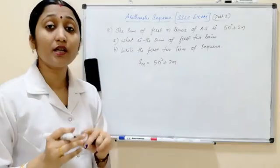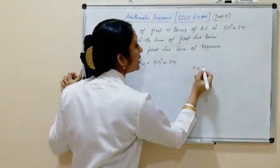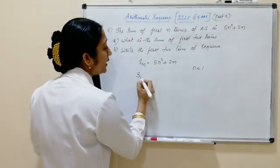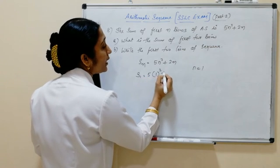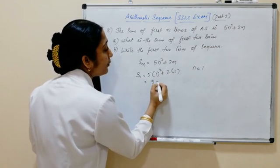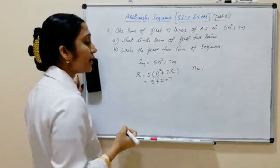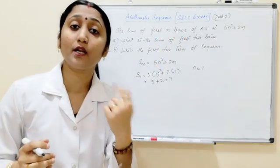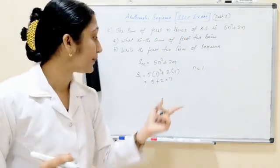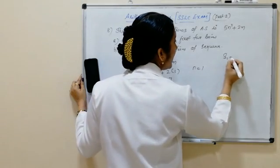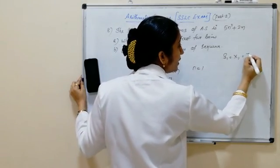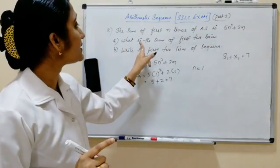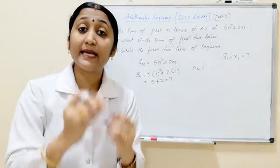The first term: S1 equals 5 into 1 squared plus 2 into 1, which is 5 plus 2 equal to 7. So the first term x1 equals S1 equals 7.